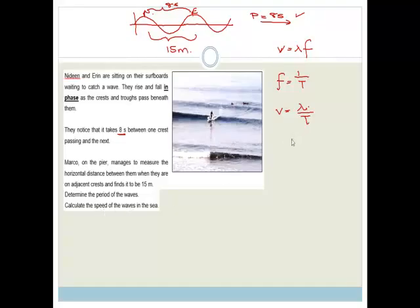And they want the speed. We've got the wavelength. The wavelength is the distance between two consecutive or successive crests or troughs. So that's 15 over the period. And the period is 8. So then we can just whip out our calculator.